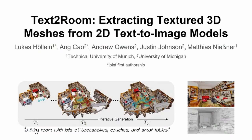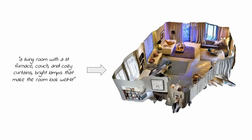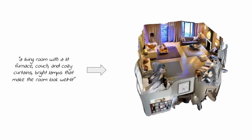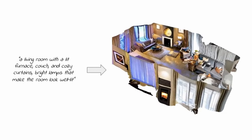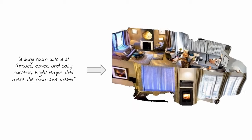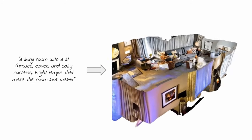We present Text2Room, extracting textured 3D meshes from 2D text-to-image models. Given a text prompt as input, our method produces a textured 3D mesh of an indoor scene.